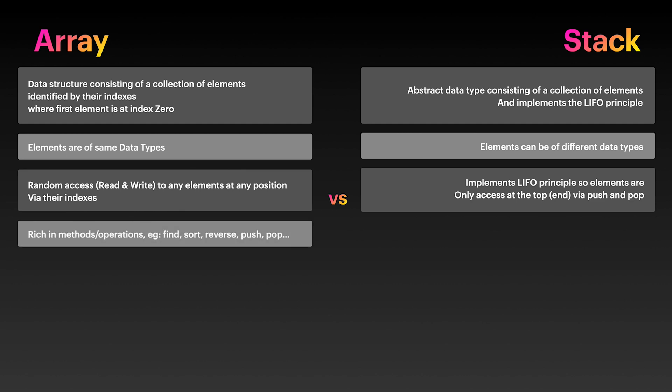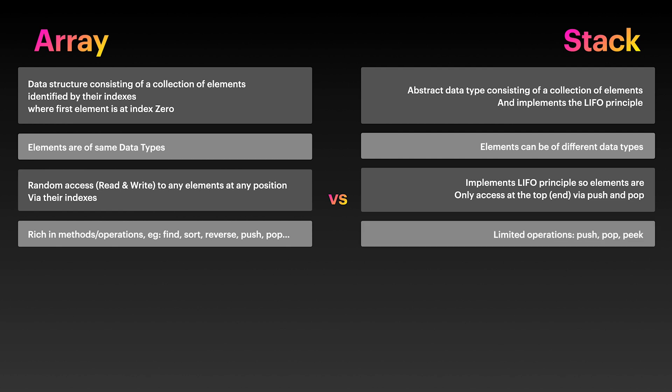Because of these differences, arrays have many methods to do all sorts of things like sort, find, reverse, insert, get index, etc. Arrays may even contain push and pop-like methods, which are the main methods for stacks. That's also why you may find arrays being used as a stack data structure.